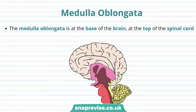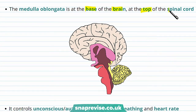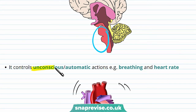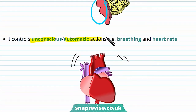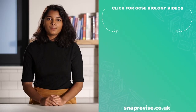Now let's talk about the medulla oblongata. The medulla oblongata is at the base of the brain and at the top of the spinal cord — in this diagram it's this region here. It controls the unconscious or automatic actions, and these include breathing and heart rate.